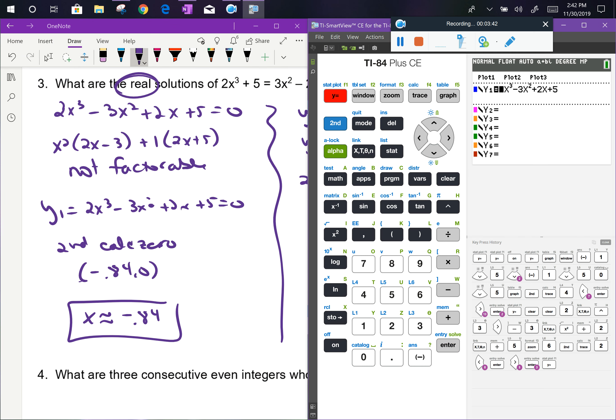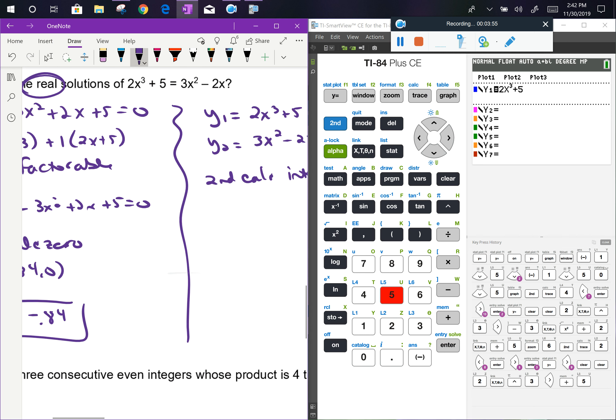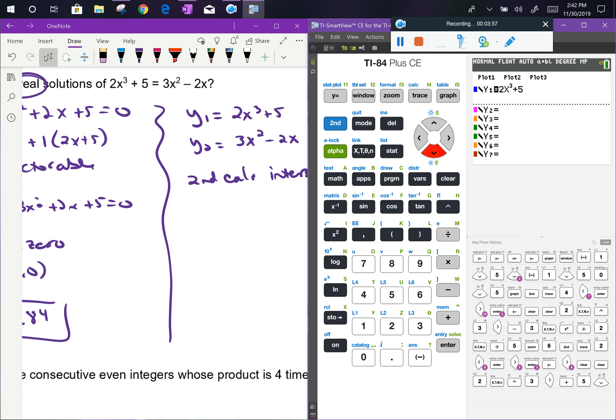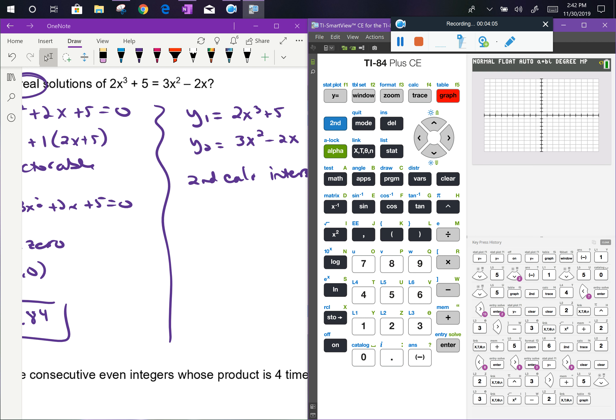So I go to y equals. The left side... Actually, I'm just going to clear this whole thing out. The left side will be the 2x³ + 5, and the right side of the problem will be my y2, so 3x² - 2x. When I go to look at my graph, I'm going to see that I have a cubic and a parabola that are kind of running into each other, and I can see that they only run into each other in one spot.